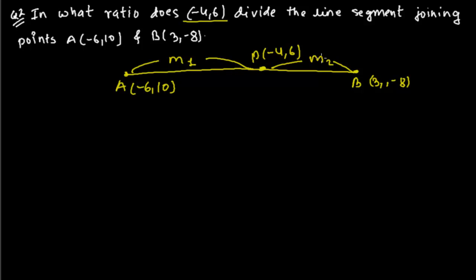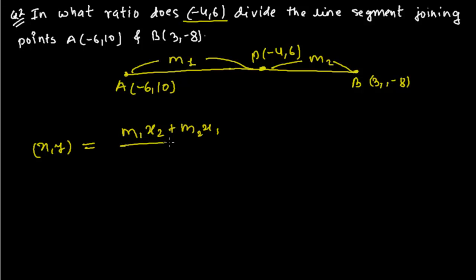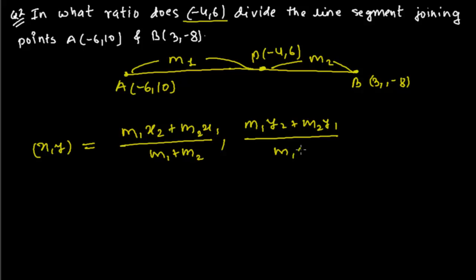Now we need to find out the value of M1 and M2. We recently learned a formula called the section formula. If there is a certain point in a line whose coordinate is (x, y), and the point is dividing the line in ratio M1 and M2, then that point is given by: x = (M1·x2 + M2·x1) / (M1 + M2), and y = (M1·y2 + M2·y1) / (M1 + M2). This is called the section formula.